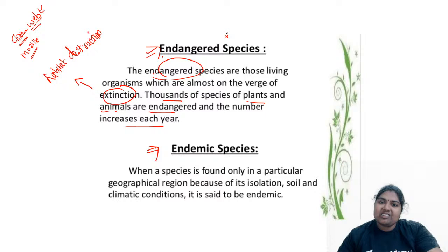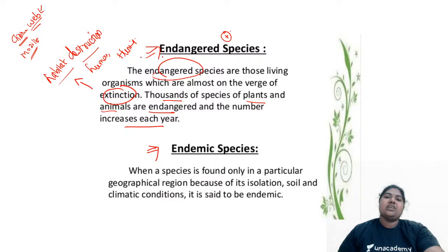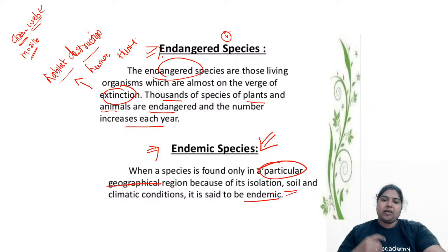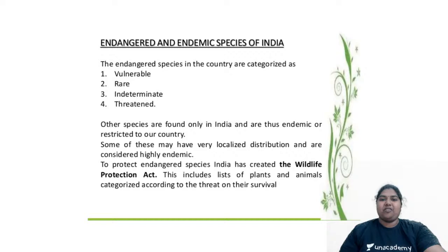Endangered species may become so because of habitat destruction, all the human activity, and hunting. These things lead to species becoming endangered. Endemic species are those found only in a particular region — maybe because of climatic conditions or specific nutrients. They are called endemic species.